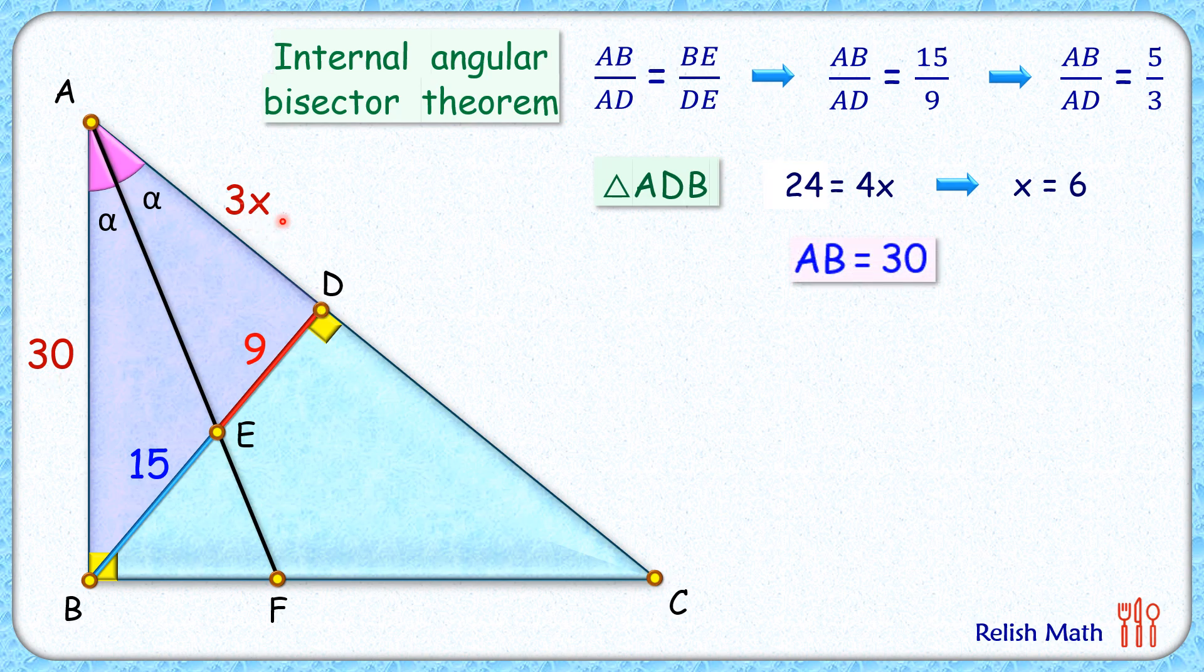Now let's consider these triangles again - triangle ABD and triangle ABC. In these two triangles, angle D is 90 degrees, this angle is also 90 degrees, and angle A is common. So by angle-angle similarity, we can say that these two triangles are similar to each other.